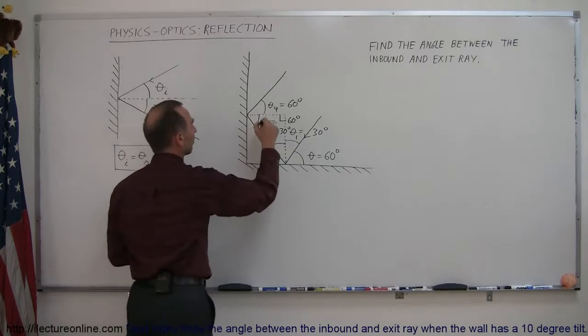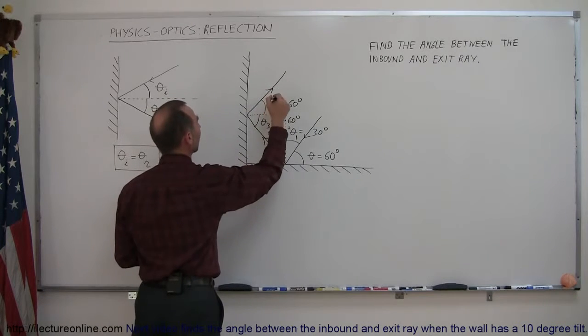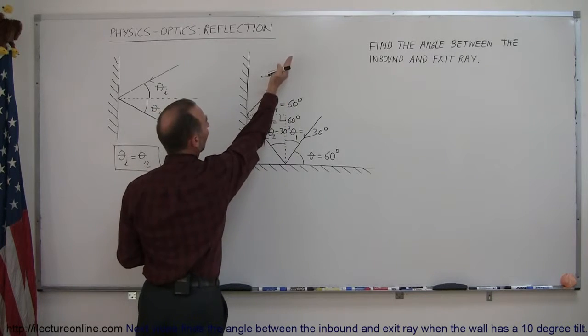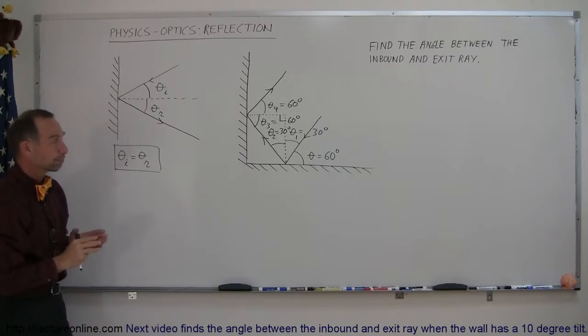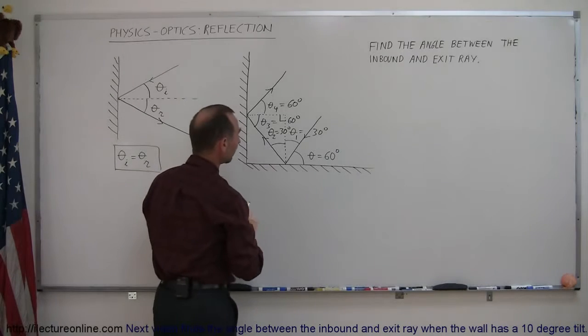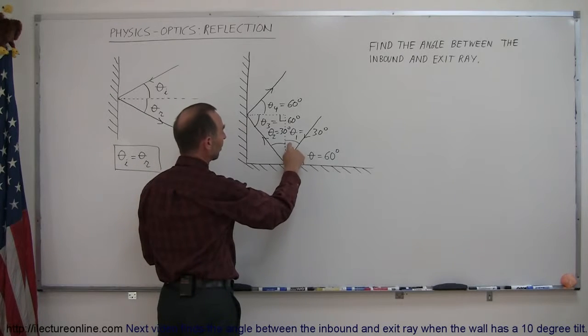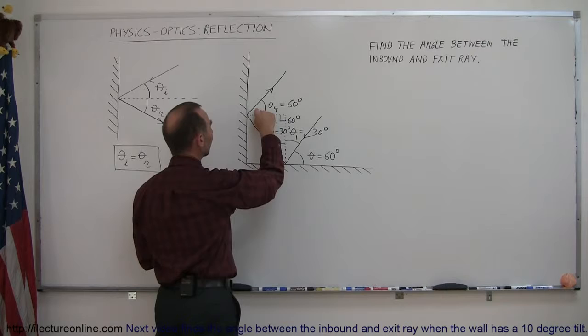Now, this is the direction of the light, and so this is the outbound or exit ray, this is the inbound ray. What is the angle between those two? Well, let's see now. Now, if I count this angle, plus this angle, plus this angle, plus this angle...